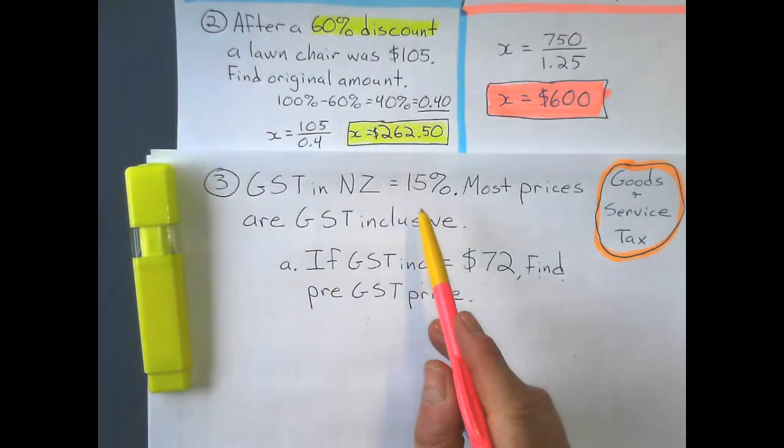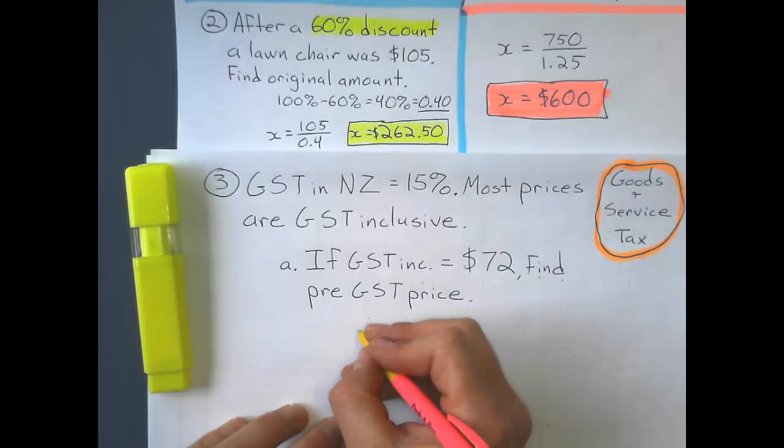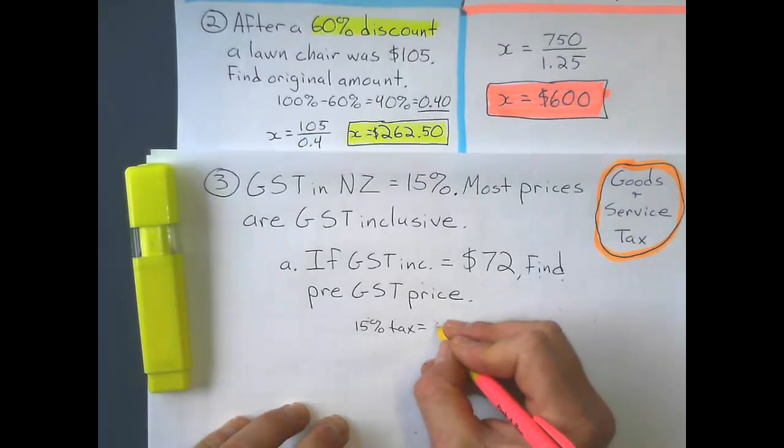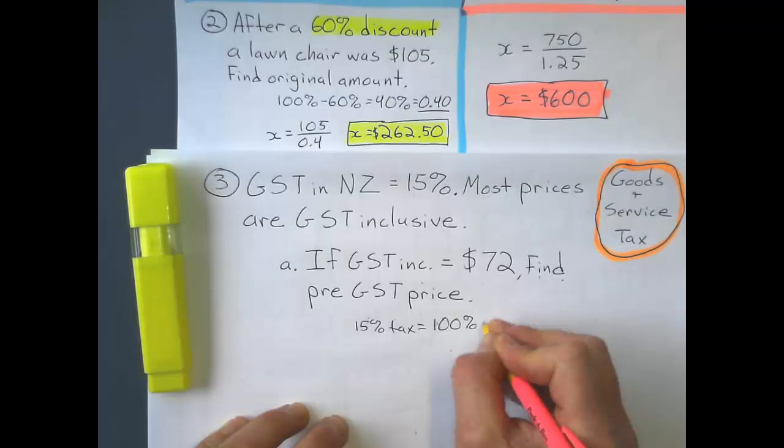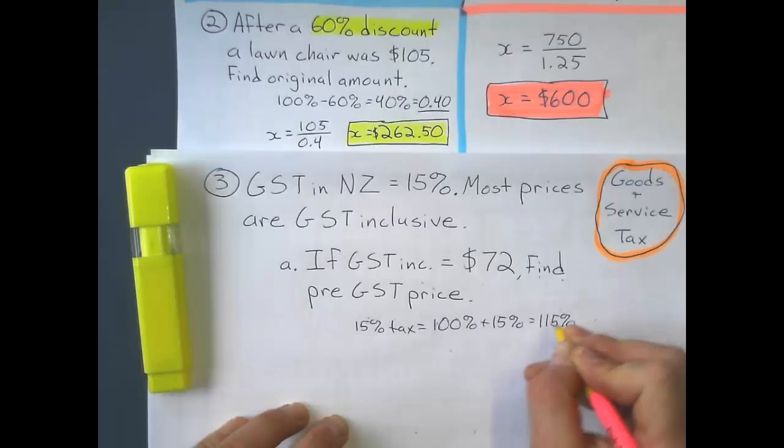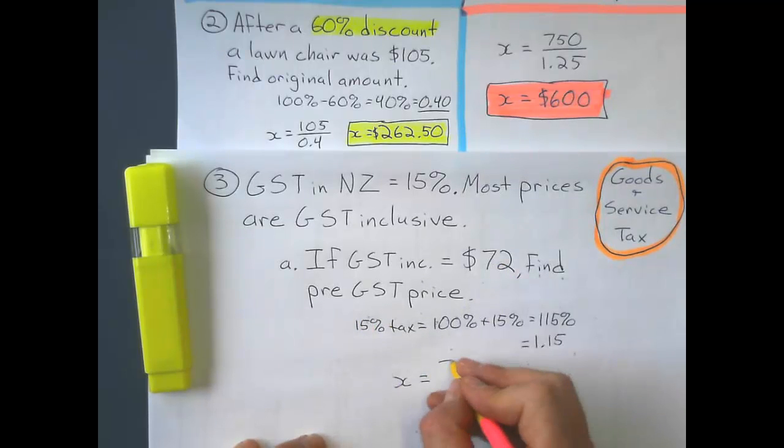We're going to have to know that a tax is a percent increase. So a 15% tax means a 15% increase. 100% plus 15% equals 115%, which the multiplier is 1.15. So the pre-GST price is my new price, $72, divided by the multiplier, 1.15.